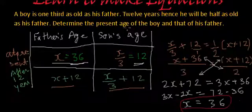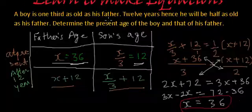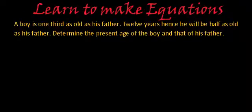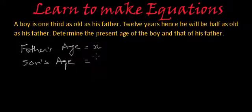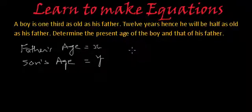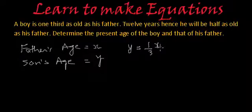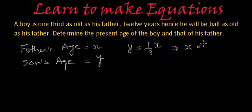Now I'm going to discuss the method in which we use two variables — one for father's age, another for son's age — and make two simultaneous equations. If we assume father's age as x and son's age as y, they say a boy is one-third as old as his father, so y equals x/3. Multiplying both sides by 3 gives x equals 3y. We'll call this equation number 1.